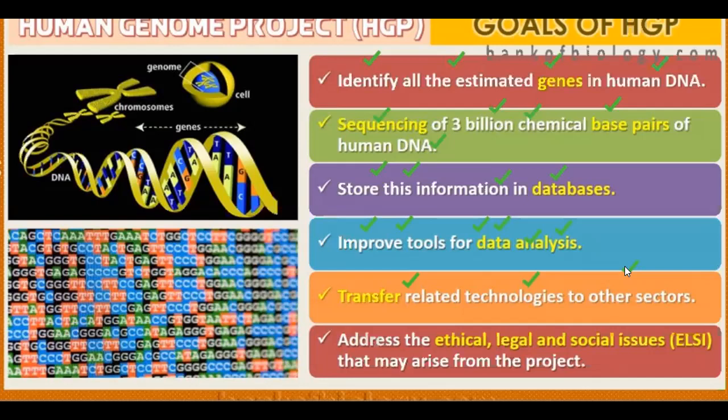For example, if there is cancer and any gene is altered within the cancer, we can learn about the treatment. Next is to address the ethical, legal, and social issues that may arise from the project. Students, there are many ethical issues. If we know information, we could use it — suppose we know which gene controls intelligence, strength, or good looks, we could artificially hybridize those things. These are the ethical and legal issues.